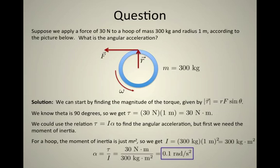As a result, the angular acceleration is just going to be torque divided by I, or 30 newton meters divided by 300 kilogram meter squareds. The result is 0.1 radians per second squared.